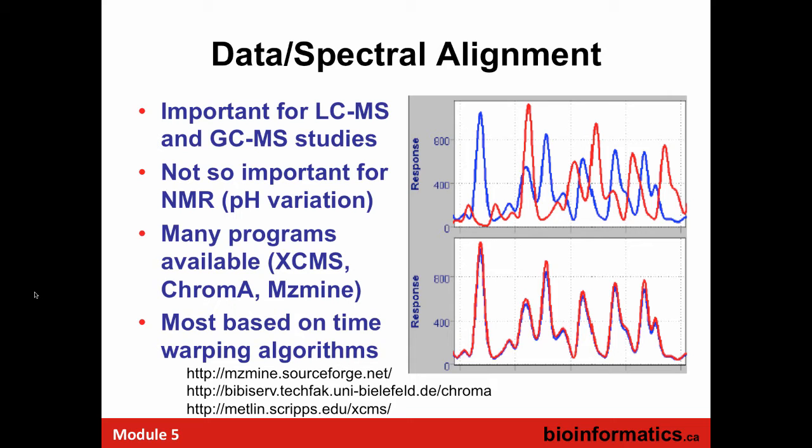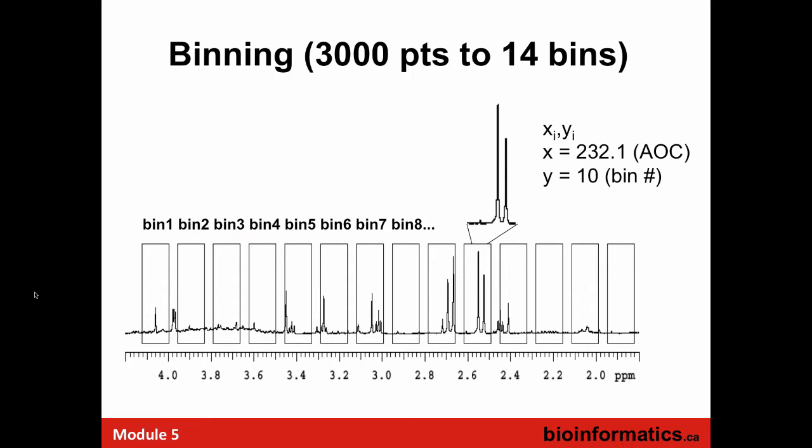In the world of NMR, but also in mass spec, binning has also been done as part of the untargeted approach. That was largely due to limitations in computer memory storage. But many people now just take all the data and don't even bother binning. Or they'll do peak picking and just compile all the peaks.